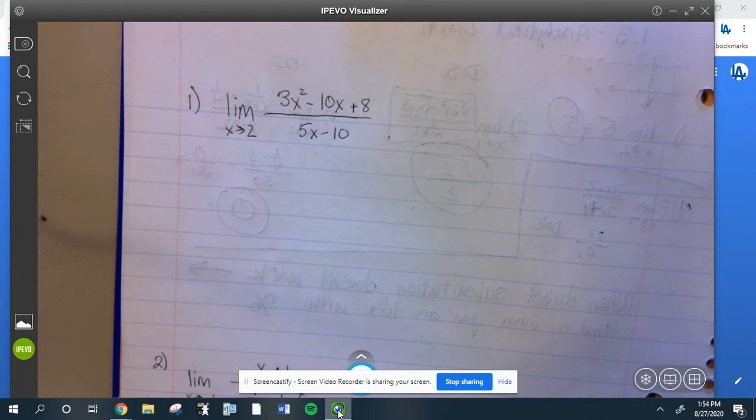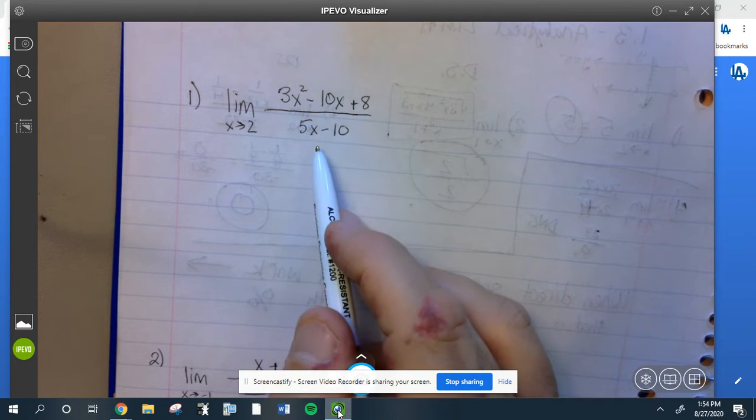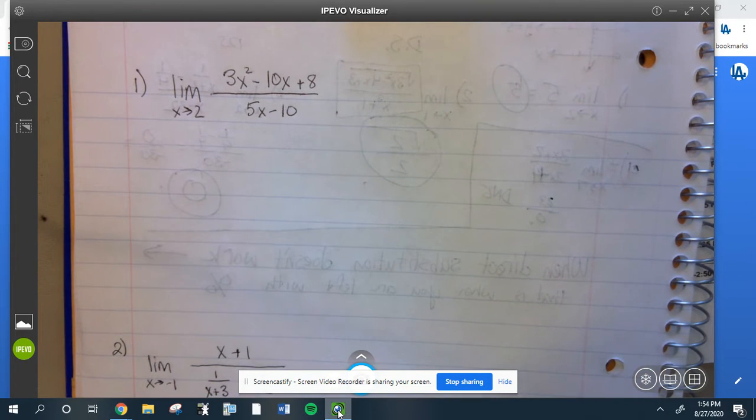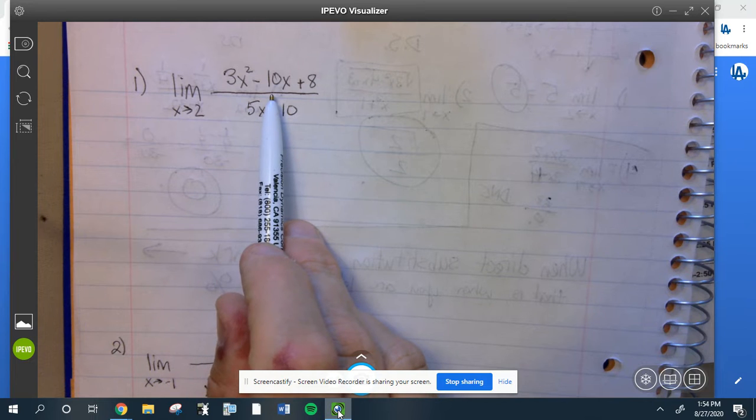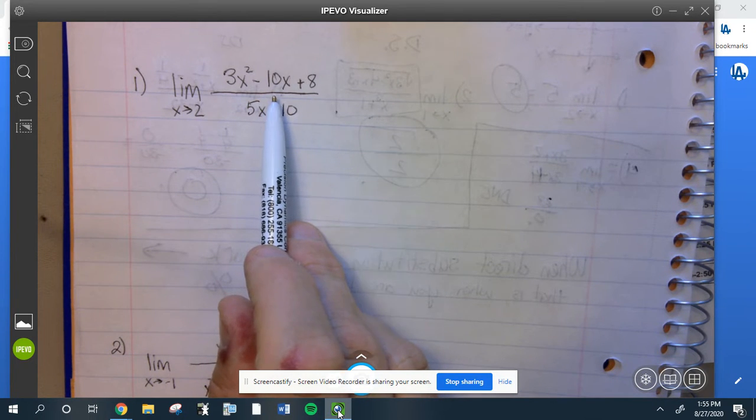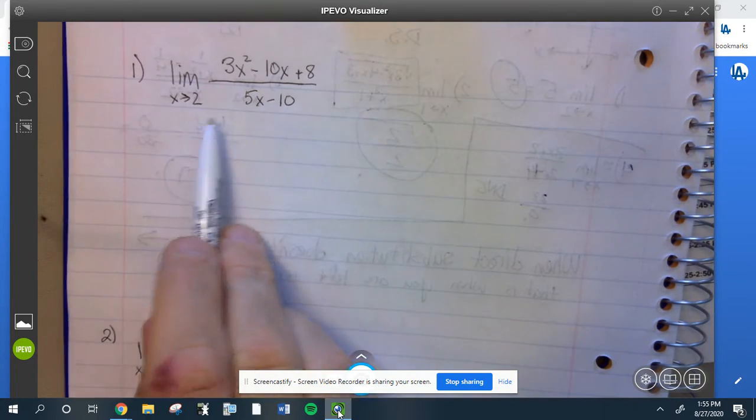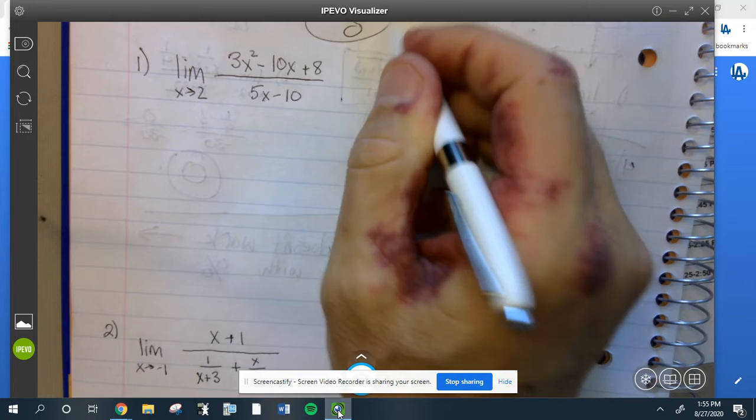The limit as x goes to 2 of a polynomial over a polynomial, so it is a rational function. If you plug into the top you get 3 times 4, 12 minus 20, negative 8 plus 8 is zero. 5 times 2 on the bottom is 10 minus 10 which is zero. So here we go, that's a zero over zero.